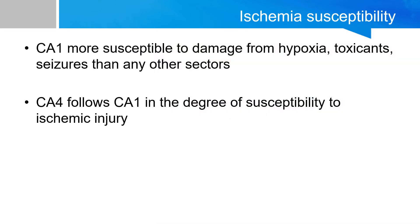A board favorite: the CA1 region is especially susceptible to damage from hypoxia or excitotoxicity after a seizure compared to any other location within the hippocampal formation, with CA4 immediately following CA1 in vulnerability.